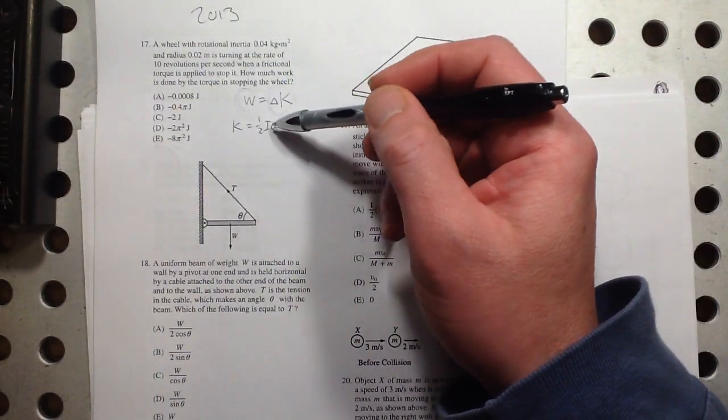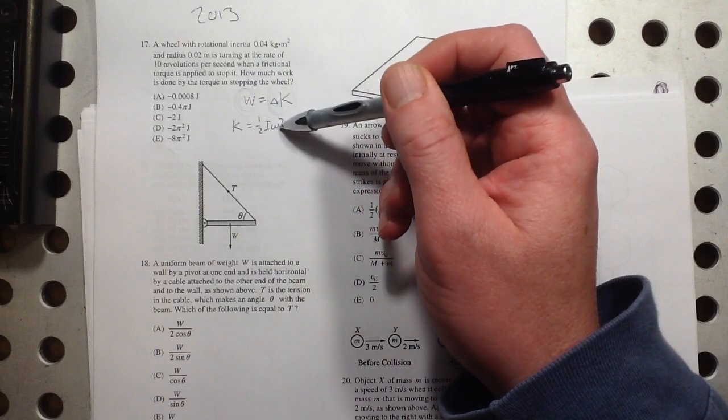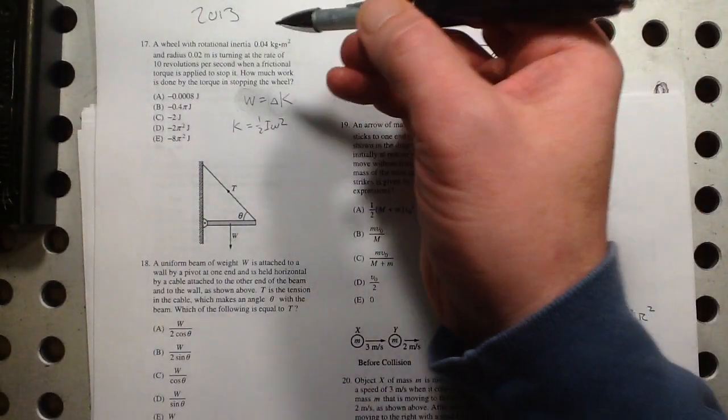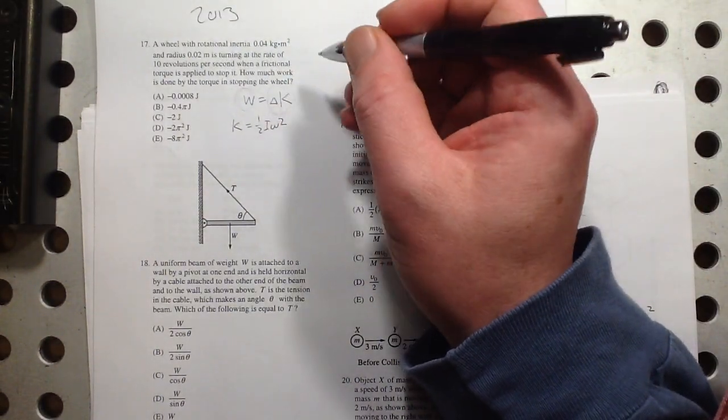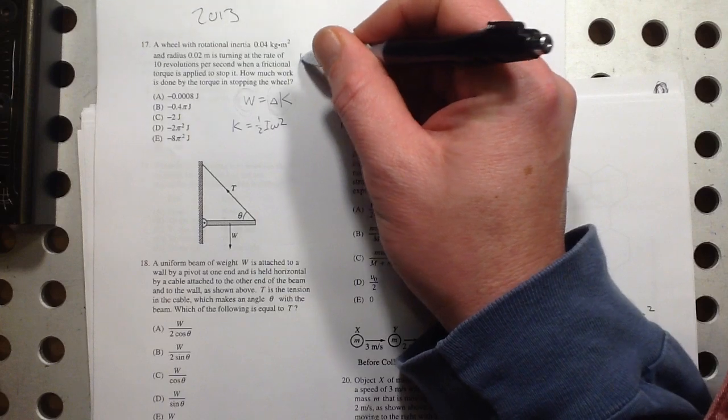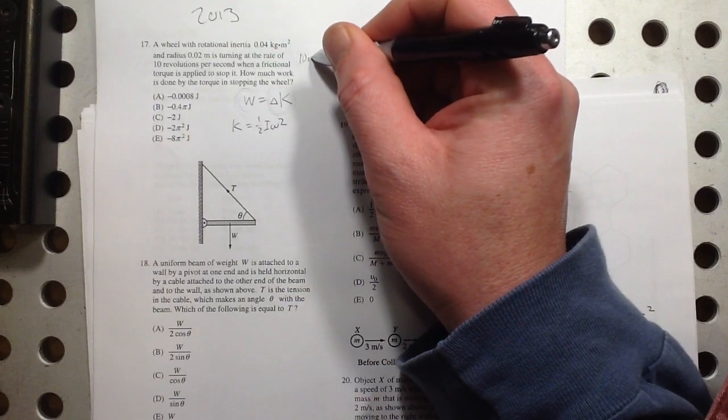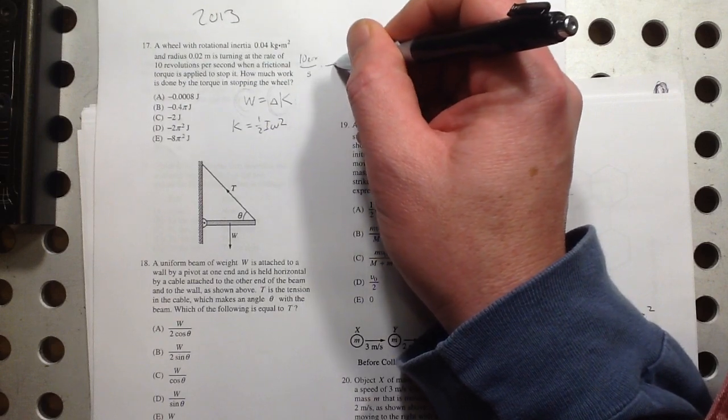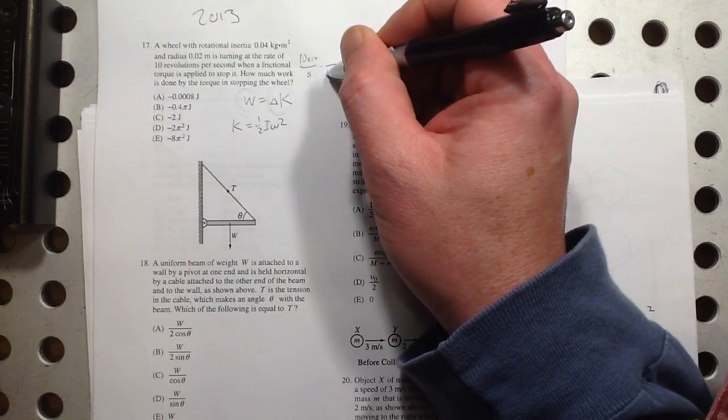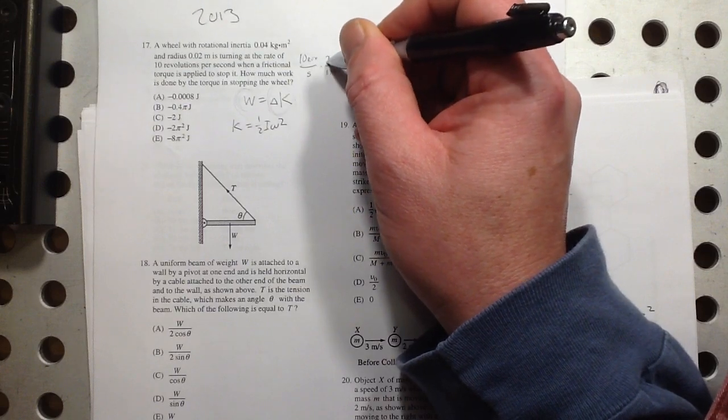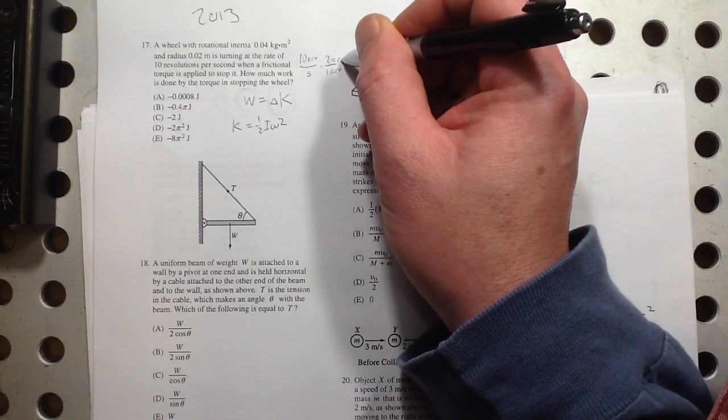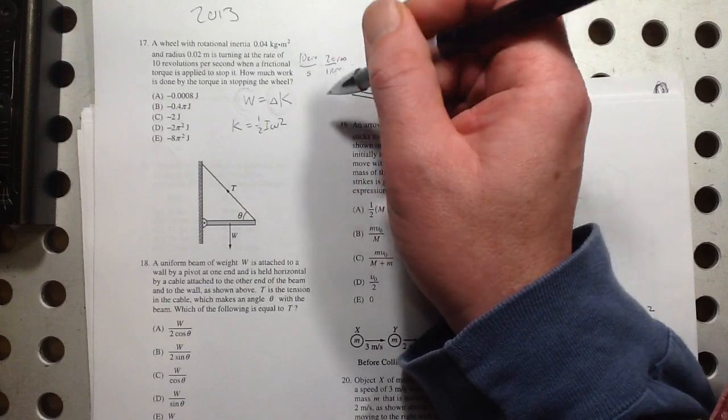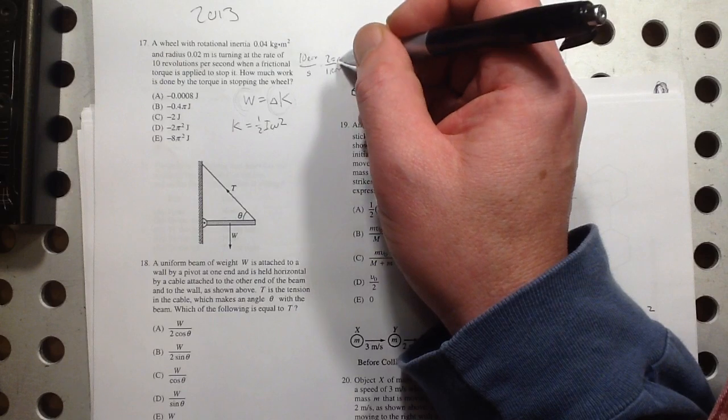So I've got one half, we've got the I, I just need to know what the omega is. And they gave us here in 10 revolutions per second. So let's see, 10 revs per second. And I know that 1 revolution is equal to 2 pi radians. So I just need to do this conversion. So it's 20 pi radians per second.